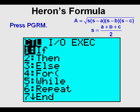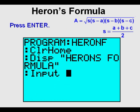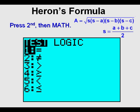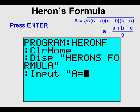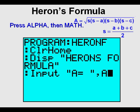To start the next line of code, press the program key, arrow once to the right to the input-output menu, and press Enter for Input. Enter the quotation mark by pressing alpha, then the plus sign. Enter A by pressing alpha, then the math key to get the A. Enter the equal sign by pressing 2nd, then math for the test menu, and press Enter to choose the equal sign. Enter a space by pressing alpha, then the zero key. Enter the closing quotation by pressing alpha, then the plus key. Press the comma key above the seven key, and make an A by pressing alpha, then the math key. Press Enter.